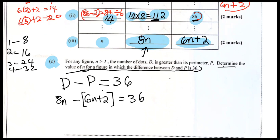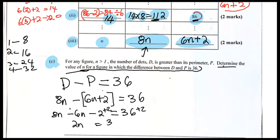Be careful — what you don't want to do is apply the negative only to the 6n and forget it's going to affect the positive 2, because p is a binomial. So you set up: d minus p equals 36, which gives 8n minus (6n + 2) = 36, which simplifies to 2n minus 2 = 36, then 2n = 38, then divide by 2 to get n = 19. So the 19th figure is the one where that difference occurs.